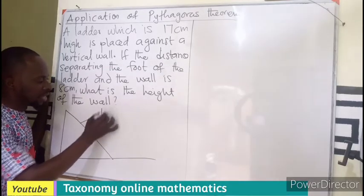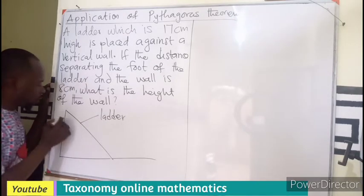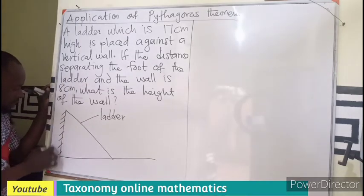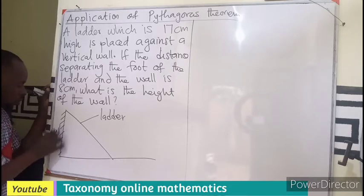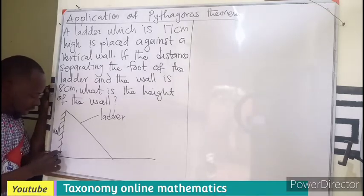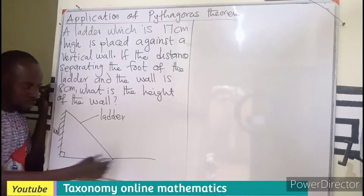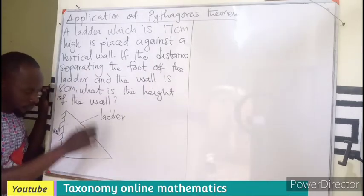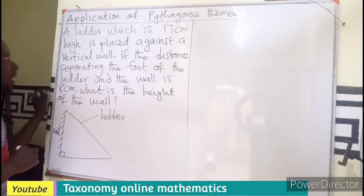We can call this one our ground, we can call this one the ladder, where this will be our wall. Alright, so this is a diagram where this is going to be perpendicular. So I can draw this to form a triangle which is a right angle triangle.